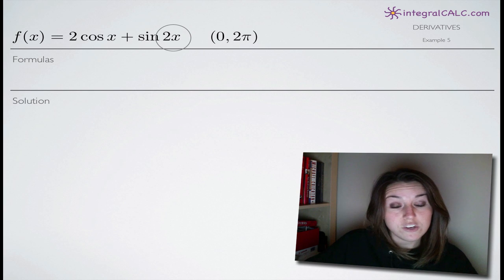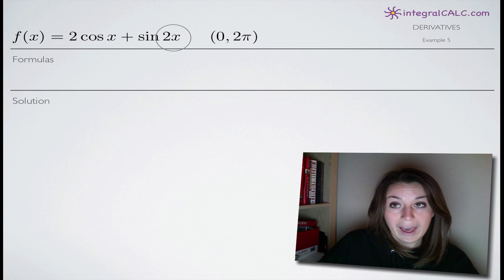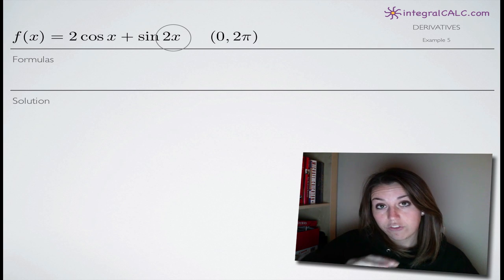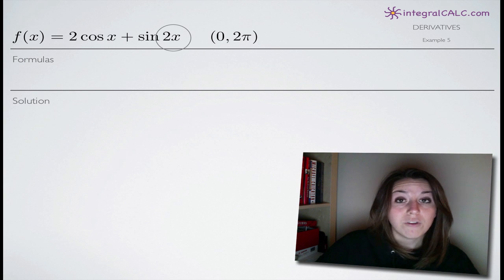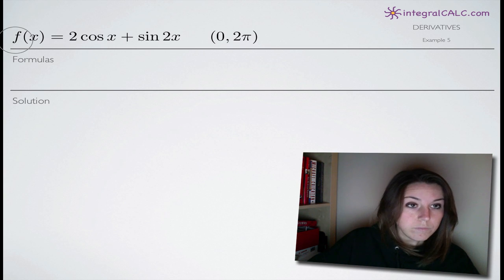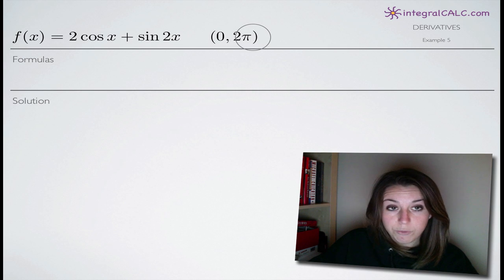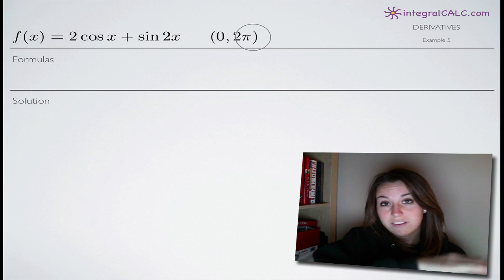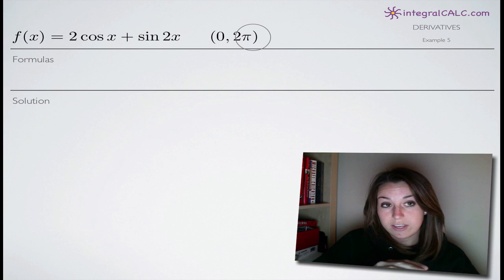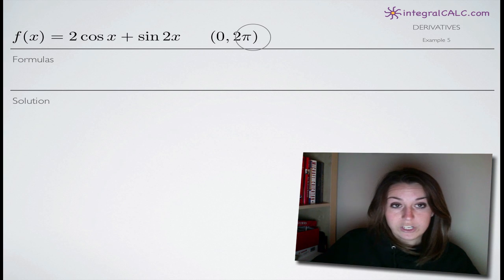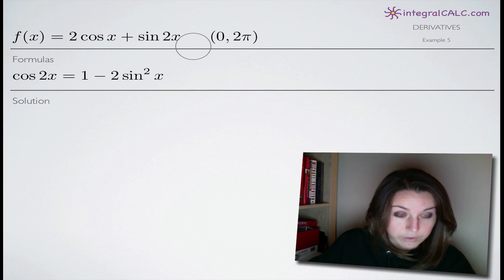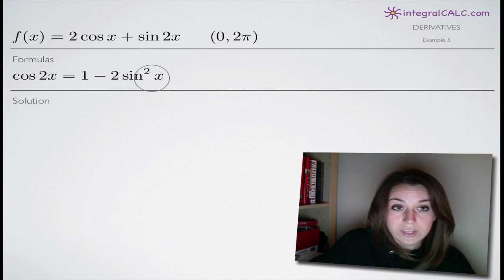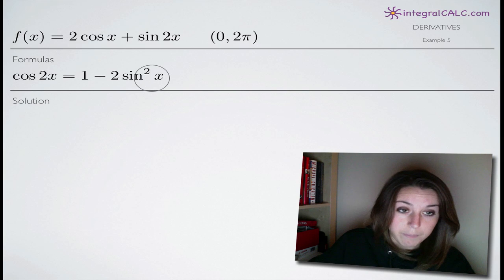What we're going to do is take the derivative of the function, set it equal to 0, solve for x, and then use our answers or evaluate our answers using the unit circle. That will give us all of the points on this function in the interval 0 to 2pi where the slope of the function is a horizontal line. I'm going to go ahead and put down the one formula that we'll be using — it's a double angle formula, but we'll get to it later.